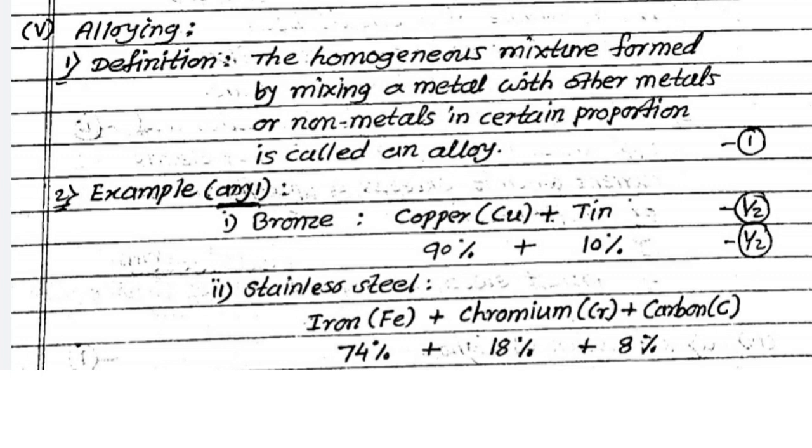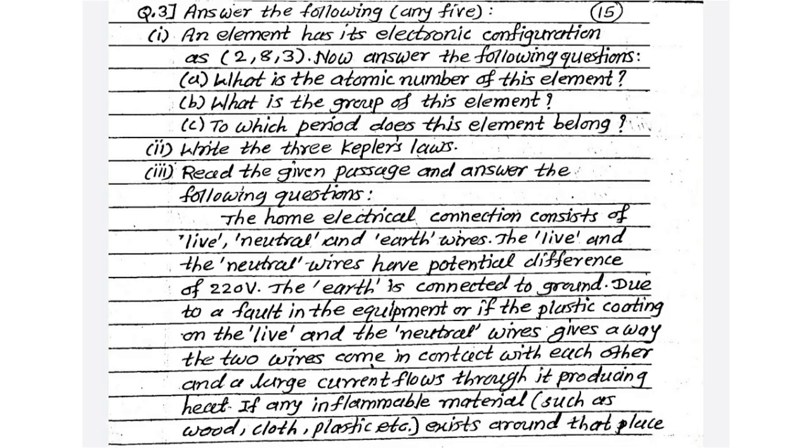Then we write the next option. Definition of alloy, you are getting 1 mark. And example related to alloy with composition. If you are not writing the composition, only write copper plus tin, you are getting only half mark. So write with composition. In this way you write all answers. In question number 3, answer the following. Total 8 options are given. You attempt any 5 options for 15 marks.